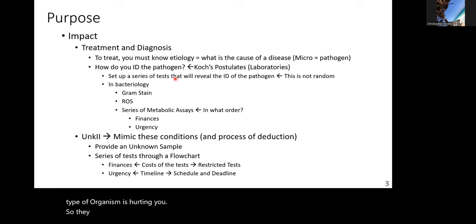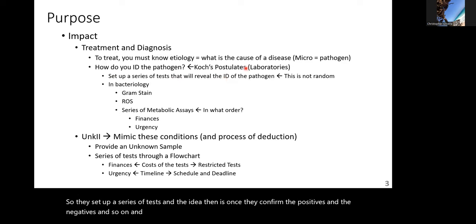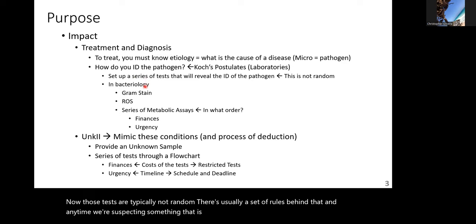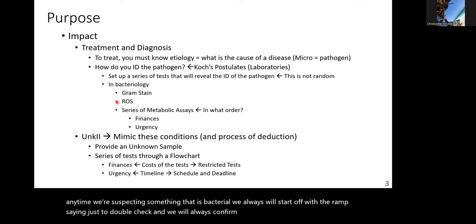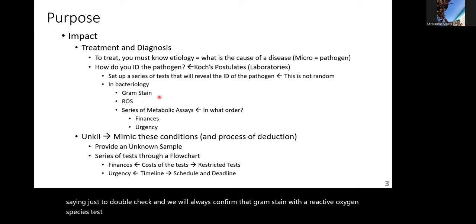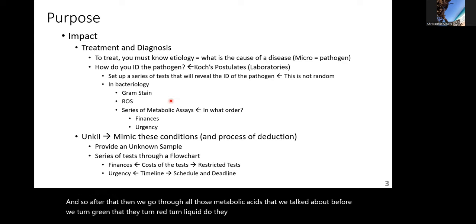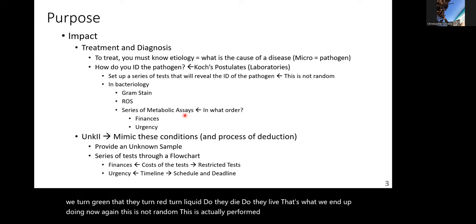A series of tests is set up, and once they confirm the positives and negatives, they identify the pathogen. Those tests are not random — there's a set of rules behind them. Anytime something bacterial is suspected, we always start with a Gram stain, and we confirm it with a reactive oxygen species test. After that, we go through all the metabolic assays: do they turn green, red, liquid? Do they die or live? This is performed with a specific strategy.